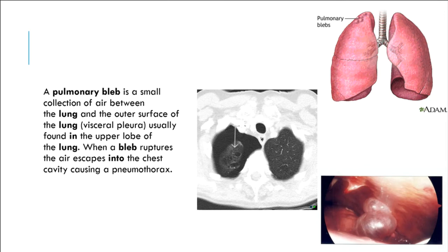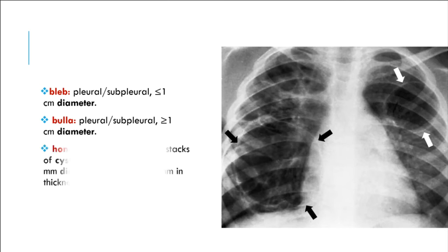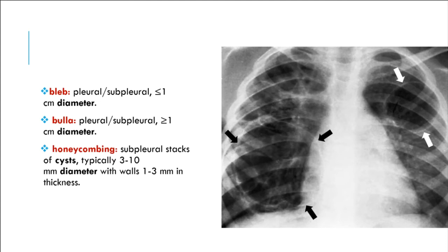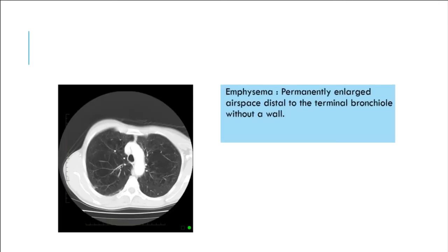When the bleb ruptures, the air escapes into the chest cavity causing a pneumothorax. Bleb: pleural/subpleural, less than or equal to 1 cm diameter. Bulla: pleural/subpleural, greater than or equal to 1 cm diameter. A bulla occupying more than 30% of the hemithorax is a giant bulla. Honeycombing: subpleural stacks of cysts, typically 3 to 10 mm diameter with walls 1 to 3 mm thick. Pneumatocele: usually a transient cystic airspace, due to pneumonia or trauma. Emphysema: permanently enlarged airspace distal to the terminal bronchiole without a wall.